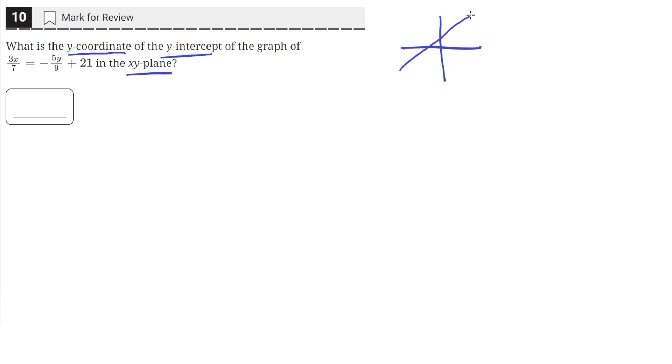So for any line, the y-coordinate of the y-intercept is the value of y when x equals 0. That's the value of y on the y-axis when x is 0.